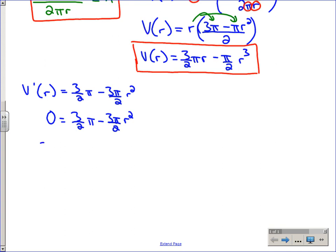I'm going to bring that second term over to this side. There's a 3/2 π on both sides of the equation, so that's going to cancel. You're left with just r² equals 1. That means r is plus or minus 1.